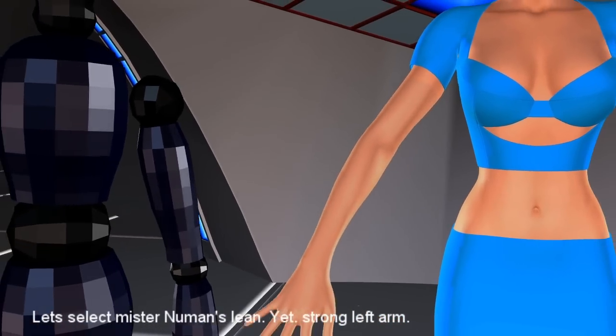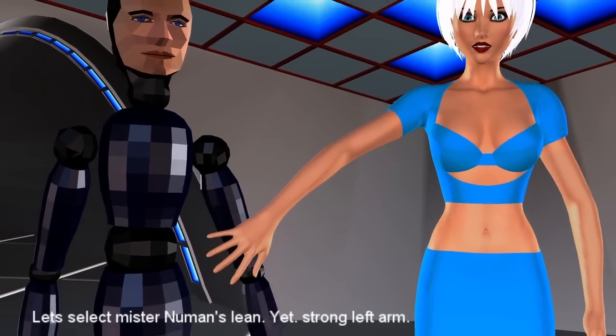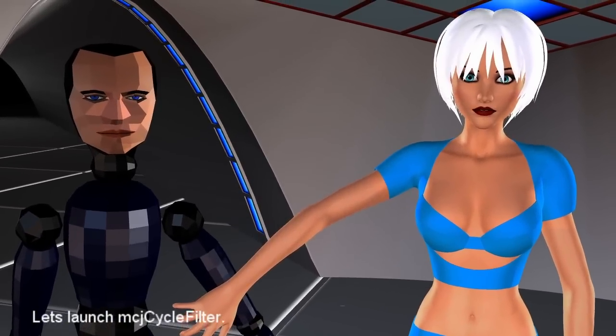Let's select Mr. Newman's lean yet strong left arm and let's launch MCJ Cycle Filter.